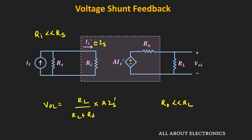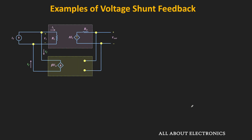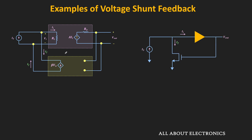Now let us see in actual circuits how this voltage-shunt feedback is implemented. In this topology, the output voltage is sampled and sent back to the input side as a feedback current. One way to achieve the voltage-to-current conversion is using a transistor. As you can see, the output voltage of the amplifier is applied to the gate terminal of the MOSFET — meaning VGS equals Vout. According to this voltage VGS, the drain current flowing through the MOSFET will change, so the feedback current IF is directly related to VGS and hence to the output voltage. With an increase in output voltage, VGS increases, and therefore drain current ID (feedback current IF) also increases.